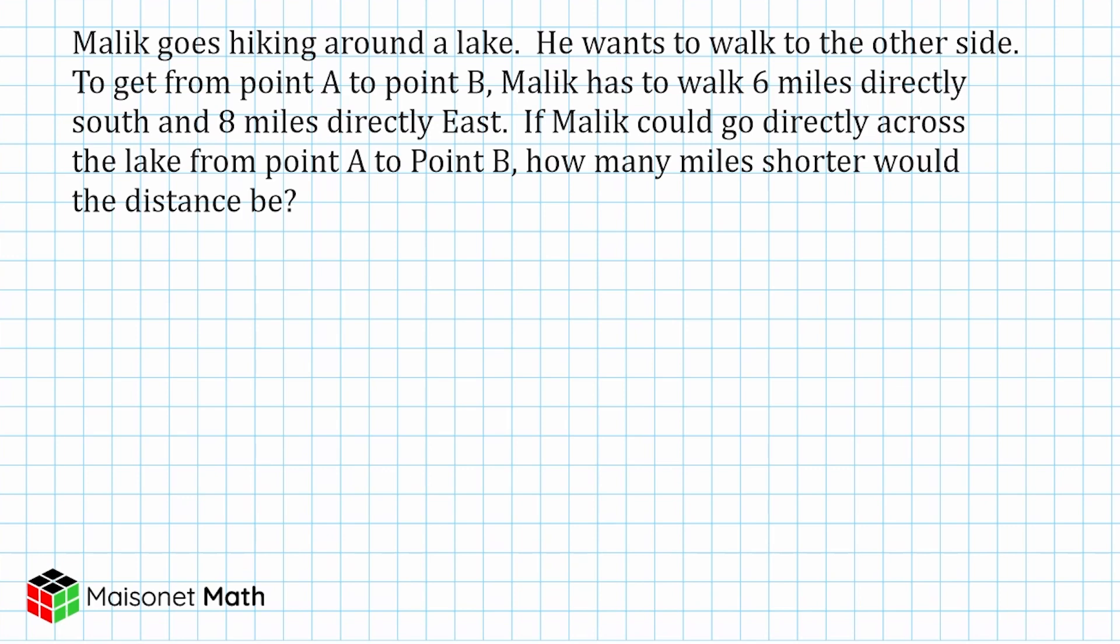So let's read the problem and determine what strategy we're going to use to solve. The problem reads that Malik goes hiking around the lake. He wants to walk to the other side. To get from point A to point B, Malik has to walk 6 miles directly south and 8 miles directly east. If Malik could go directly across the lake from point A to point B, how many miles shorter would the distance be?